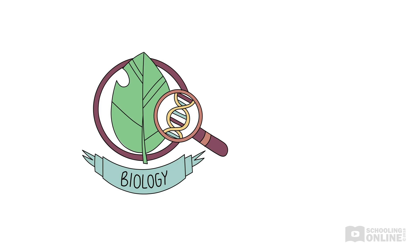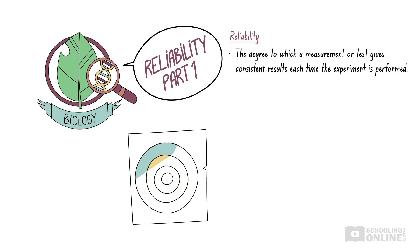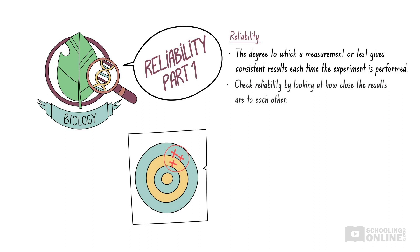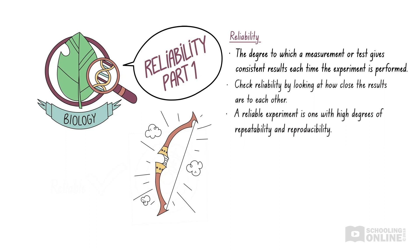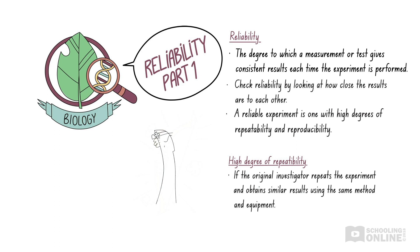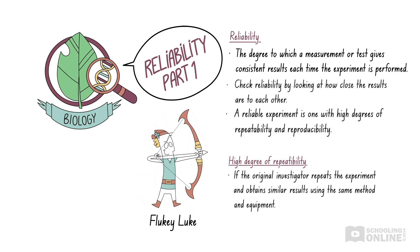Let's revise what we've discussed in this video. Reliability is the degree to which a measurement or test gives consistent results each time the experiment is performed. We can check if the results of an experiment are reliable by looking at how close the results are to each other. A reliable experiment is one with high degrees of repeatability and reproducibility. An experimental procedure is repeatable if the original investigator repeats the experiment and obtains similar results using the same method and equipment.